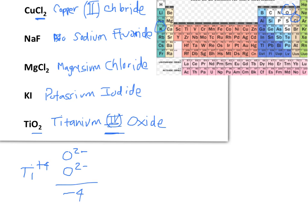To summarize the basic approach: first, confirm you have an ionic compound. Then figure out where your metal is on the periodic table — is it a transition metal or a main-group metal? If it's a main-group metal, just write the name: cation first, anion second with an -IDE ending. If it's a transition metal, do the same but indicate the charge on the metal using a Roman numeral, determined by looking at the charge and number of counter ions present. This is basic ionic nomenclature.